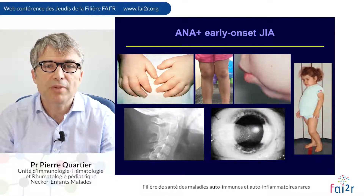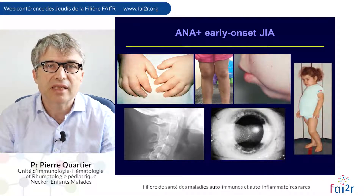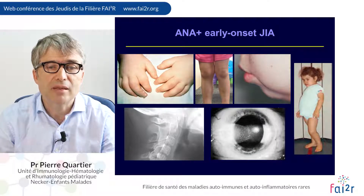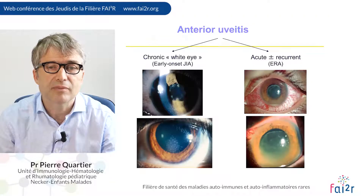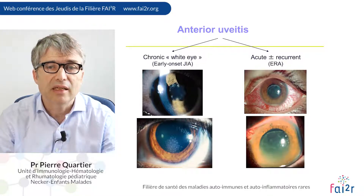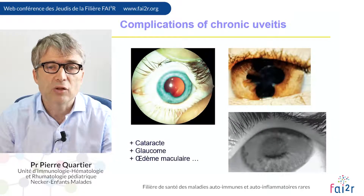Very peculiar in children is the problem of young children starting under the age of six — early onset oligoarticular JIA with positive ANA antibodies. These children may develop chronic anterior uveitis in addition to arthritis, which occurs without redness of the eye, unlike the acute recurrent uveitis seen in spondyloarthritis. The complications are devastating: cataract, glaucoma, macular edema, and other serious complications if this chronic anterior uveitis is not diagnosed in time.